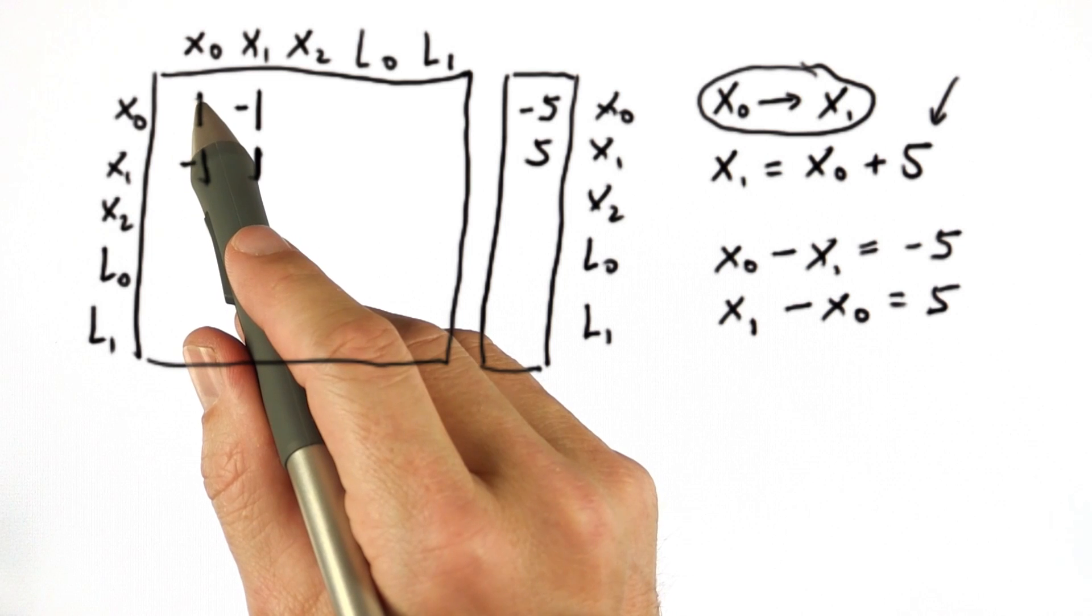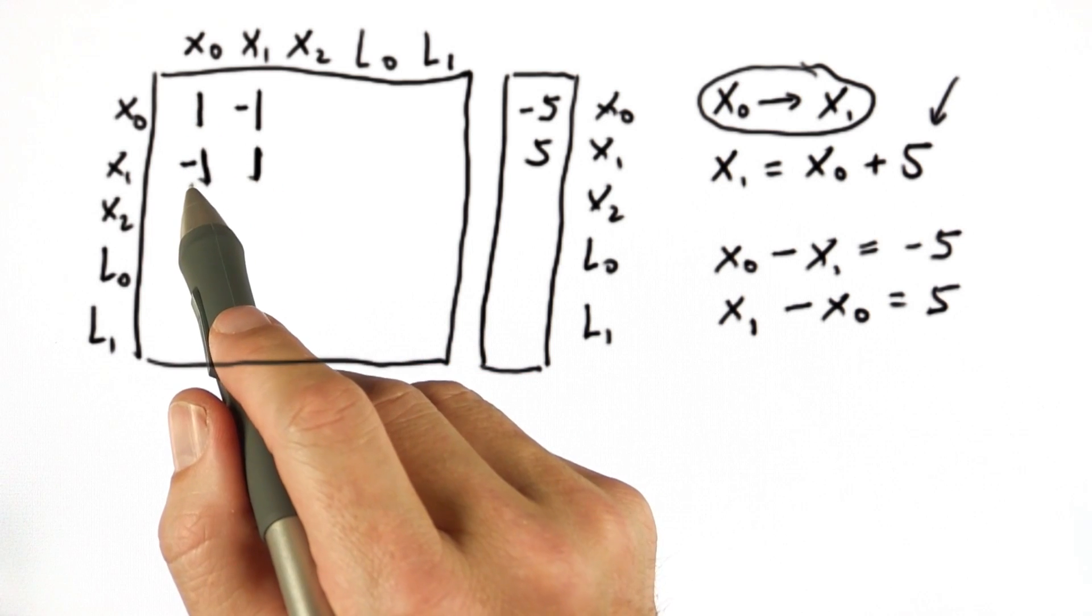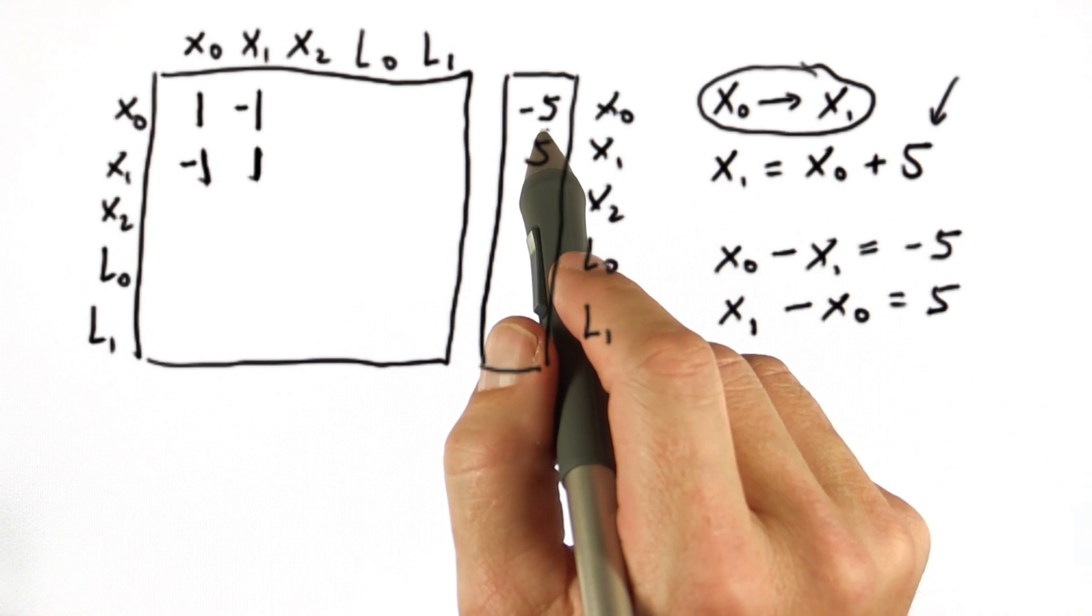In both cases, we made sure the diagonal element was positive, and then we wrote the correspondence of diagonal element as a negative value, and we added the corresponding value on the right side.